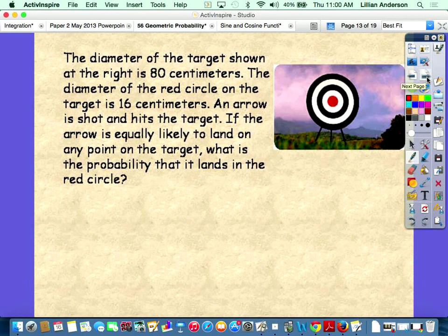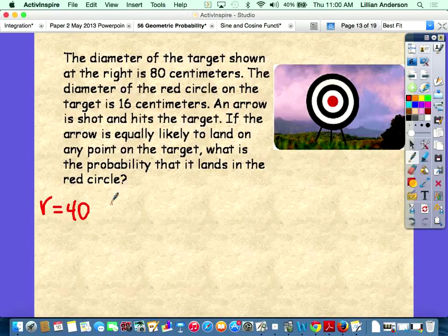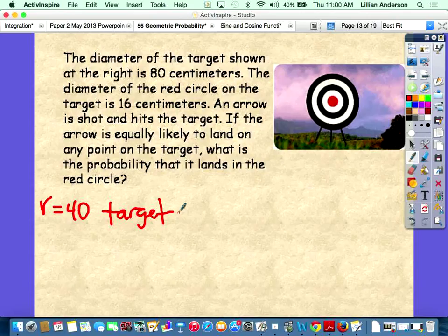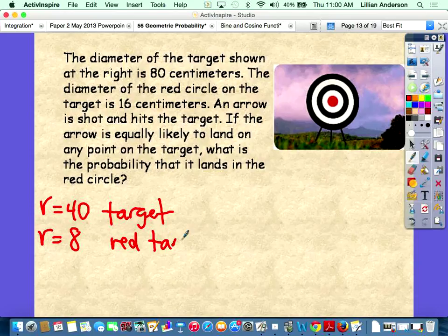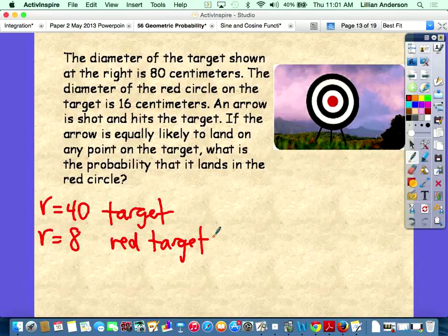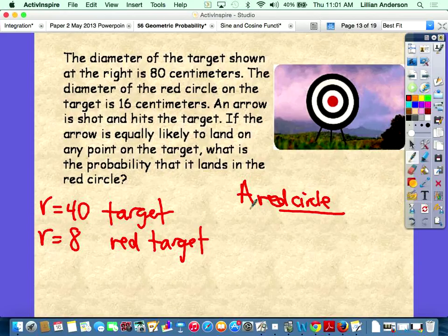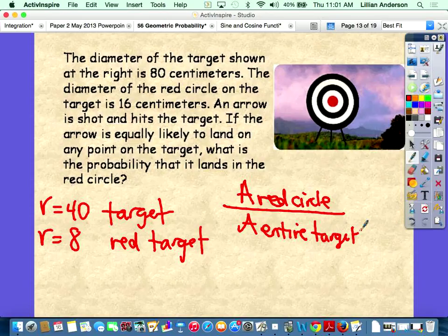The diameter of the target shown at the right is 80 centimeters. If the diameter is 80, what's the radius? 40. The diameter of the red circle is 16 centimeters. What's the radius of the red target? It's 8. If the arrow is equally likely to land on any point on the target, what is the probability that it lands in the red circle?